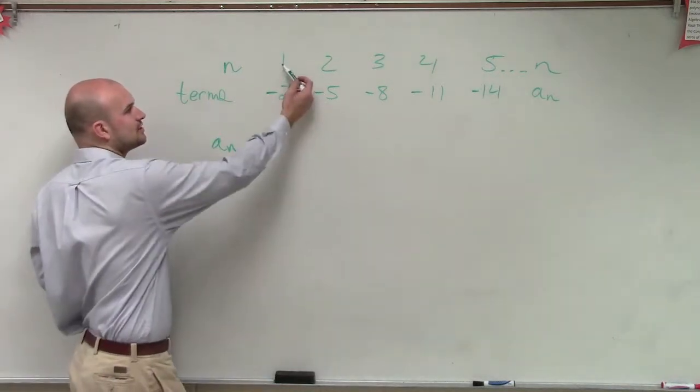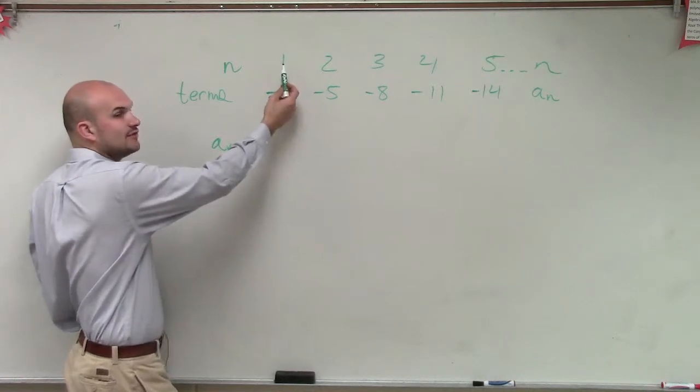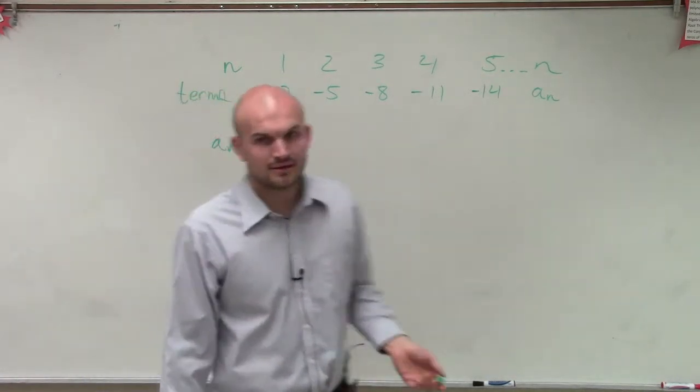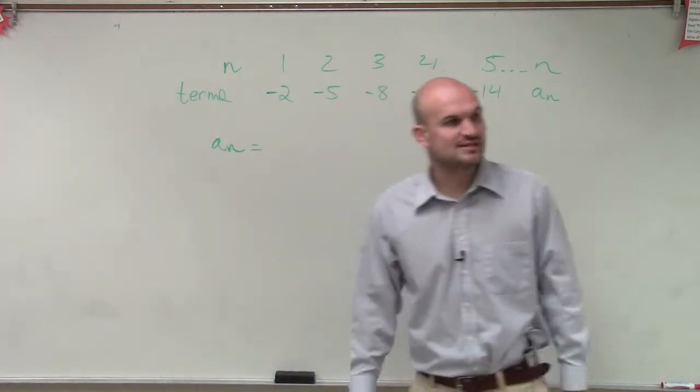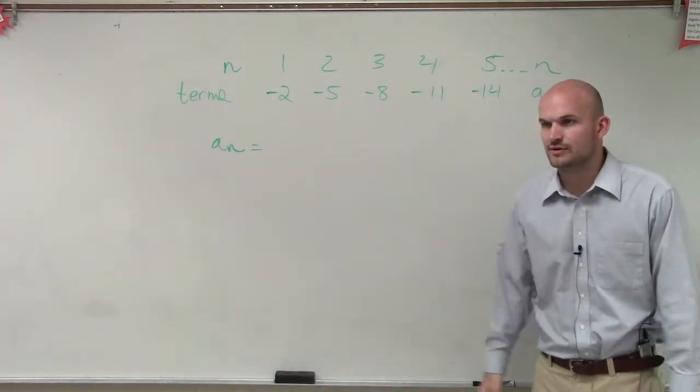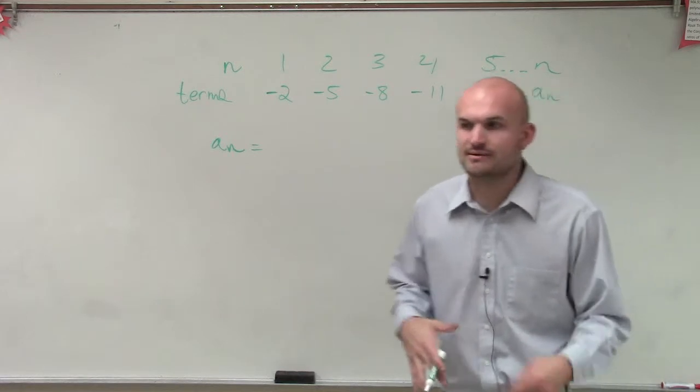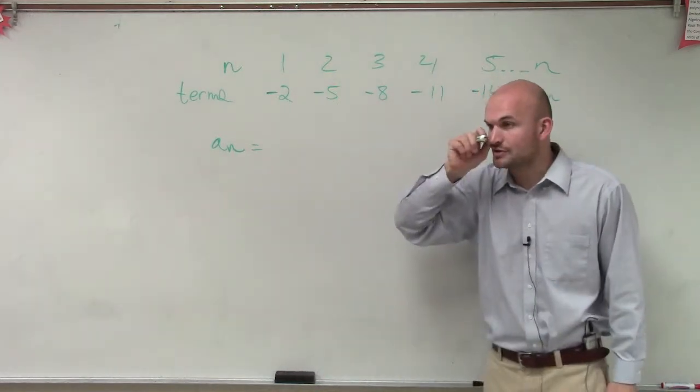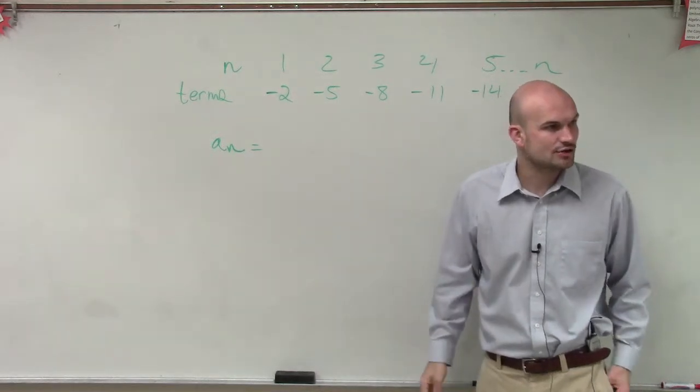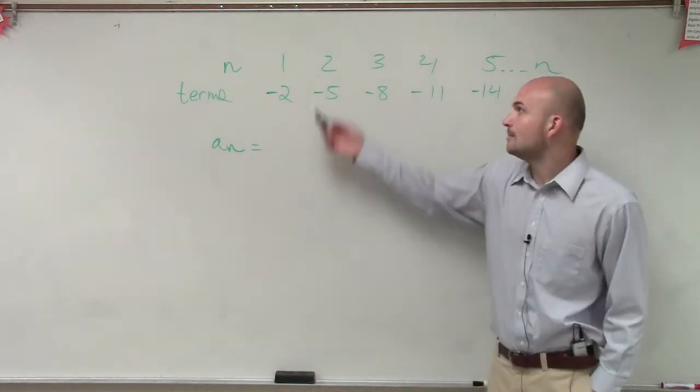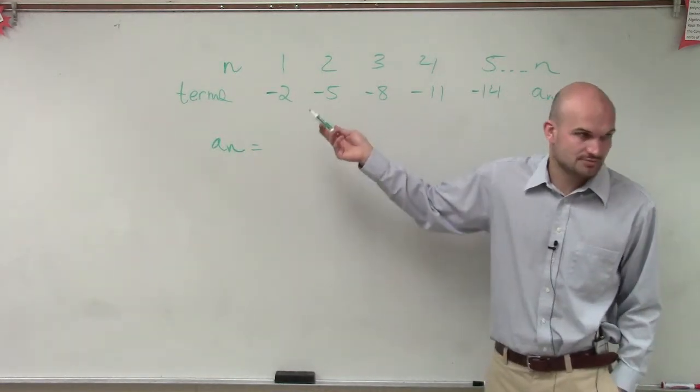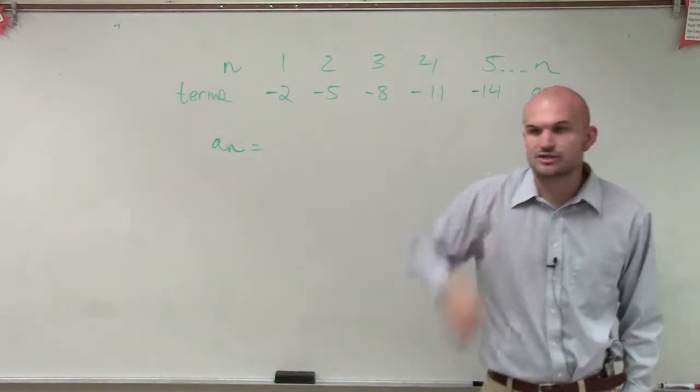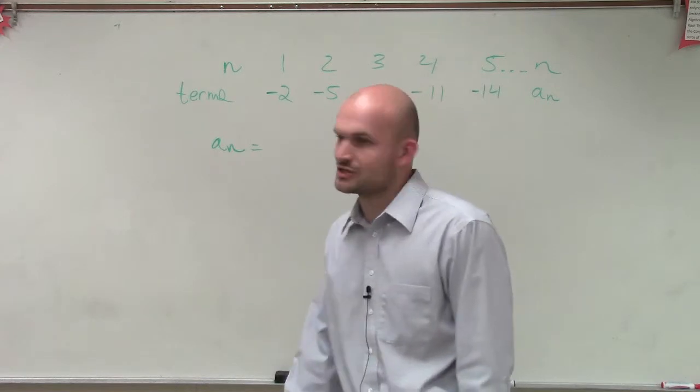So what we want to do is let's look at the relationship between the first term and its value. So if I say a sub 1, we're going to look at what is the value of a sub 1, which is negative 2. The first thing I always like to do, ladies and gentlemen, is always look at addition and subtraction. So to go from 1 to negative 2, I have to subtract 3, right? But to go from 2 to negative 5, if I subtract 3 again, does that work? No, right? So addition and subtraction are not going to work.